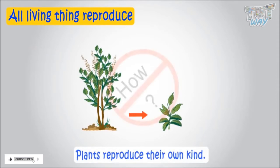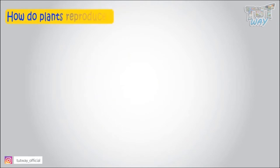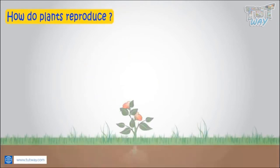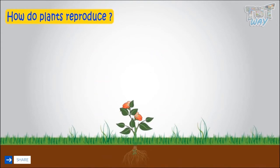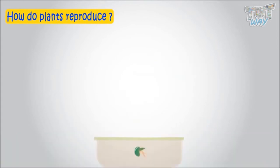But how? Today we will be learning how plants reproduce. There are many ways of reproduction in plants, but most plants reproduce through seeds — they produce seeds which, when germinated, produce a new plant.